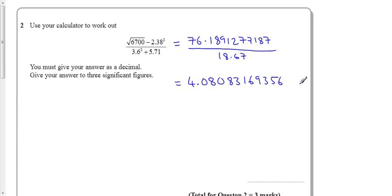4.083169356. That up to there would give me two of my three marks but it asks us for three significant figures so I want to take the first three non-zero digits.